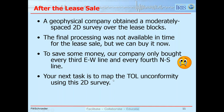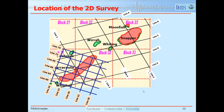The next task is to map the Top Latrobe unconformity using the 2D seismic survey. Looking at the regional setting, here are blocks 31, 32, and 33. Our team noted a feature and bid on these blocks based on it. The blue lines show the 2D seismic survey covering that prospect — it's actually the Barracuda field, which I'll call the Barracuda lead at this point in our scenario.